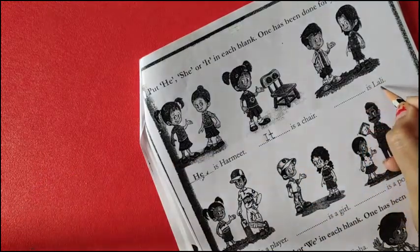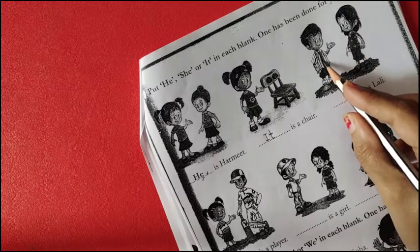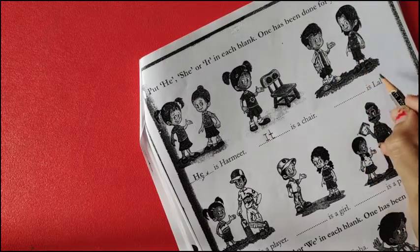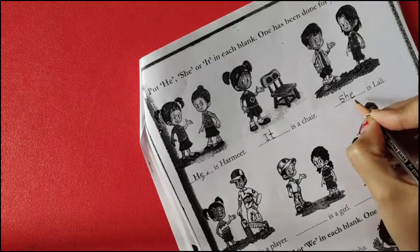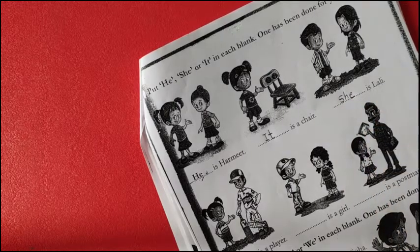Next is, dash is Lully. The boy is talking about the girl. Lully is a girl. So here we are going to use she. She is Lully.